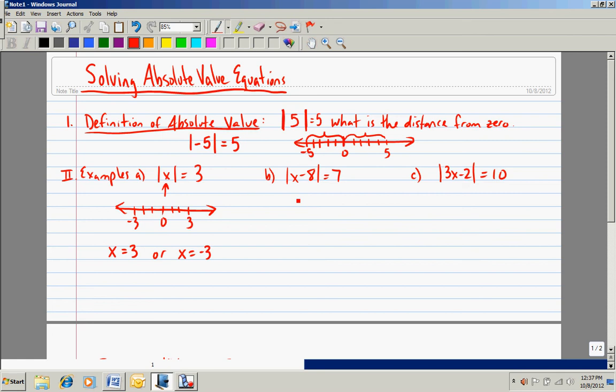Let's try example B. The absolute value of x minus 8 is 7. Just as before, we think about the two examples. The value inside the absolute value bars, x minus 8, could be 7 spaces from 0 to the right or it could be